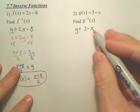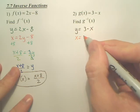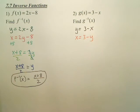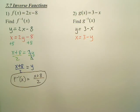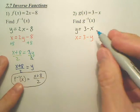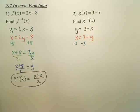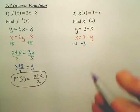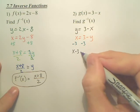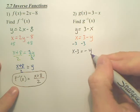I want to find the inverse. So, all I do is switch x and y. And then, I want to get y by itself. So, I'm going to minus the 3 over. So, I have x minus 3 equals negative y.